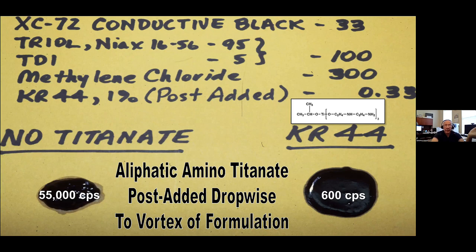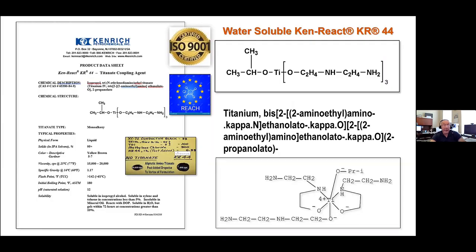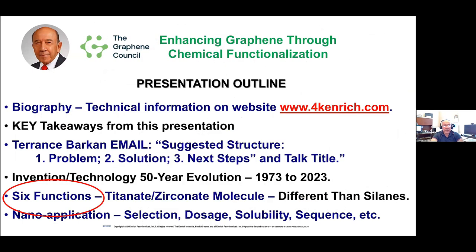In a two-component 2K urethane, we post-added the KL-44 to a vortex of the mixture of the carbon black with the urethane. If you just dumped the KL-44 in, it would not be as effective. You literally have to let the KL-44 titanate attack the interface of the carbon black under a dynamic condition. If the coupling agent is in the liquid phase already, bring in the graphene uniformly. If the graphene is already in the liquid phase, agitate it significantly and then add the coupling agent drop-wise or spray it on. These are commercial materials — real-world chemistry that we make in a plant, ship in pails and drums, and we've been serving the Fortune 500 for decades.